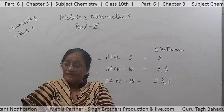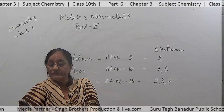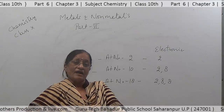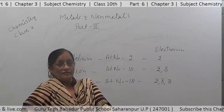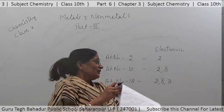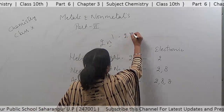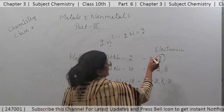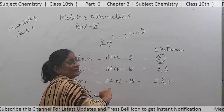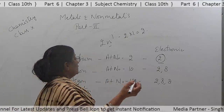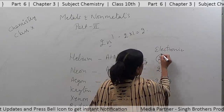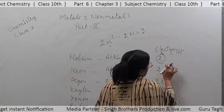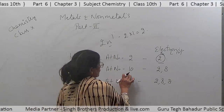Helium is chemically inert. It has only one shell with two electrons. According to the formula 2n², if the orbit number is 1, then 2×1² gives 2 electrons. So the first orbit can have only two electrons. As in the case of neon, with configuration 2 and 8, the K shell has two electrons.